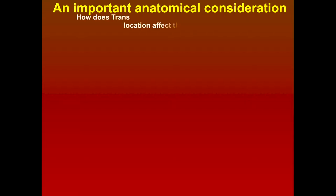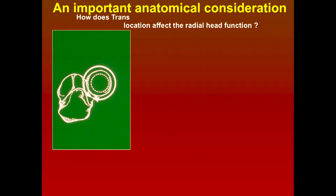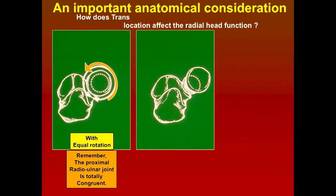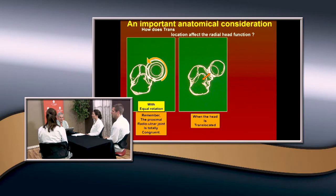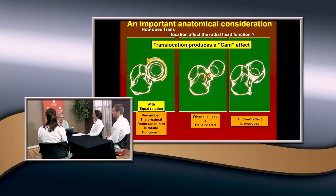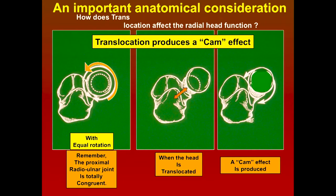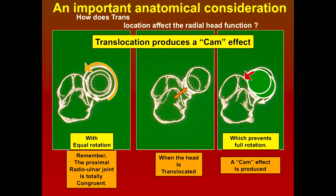There's another anatomical consideration - how does translocation affect radial head function? This is a very congruous joint, totally congruent. When you do rotation, you have full rotation in supination and pronation because it fits perfectly. But if you have a fracture and translocation occurs, what happens? This is the cam effect - it changes the axis of rotation. The axis of rotation of the proximal ulna is different than the radial head, so it'll impinge because it's offset. You need to correct not only angulation but translocation as well.